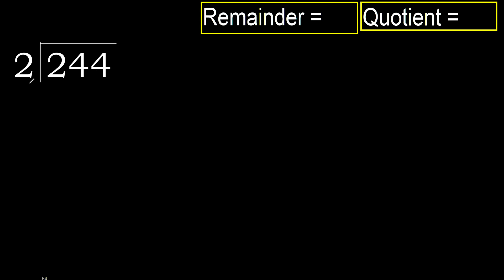244 divided by 2. 2 is not less, therefore with 2: 2 multiplied by which number is nearest to 2, but not greater? 2 multiplied by 2 is 4 — 4 is greater. Multiplied by 1 is 2, which is not greater. Subtract.